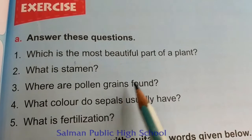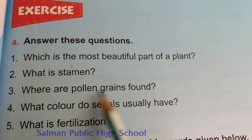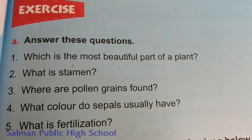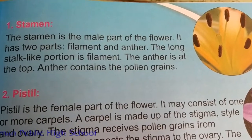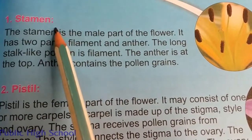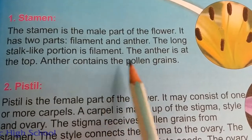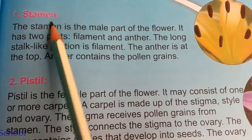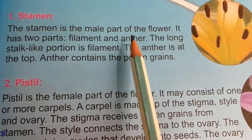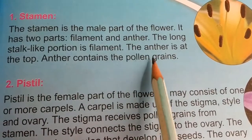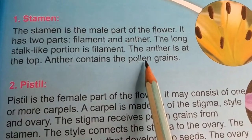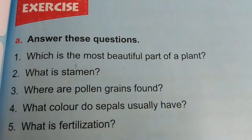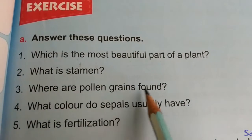Question number 3 is: where are pollen grains found? This is what we discussed on page number 5. Here we studied the stamen, which contains the pollen grains. Stamen has two parts: filament and the anther. The pollen grains are found inside the anther.